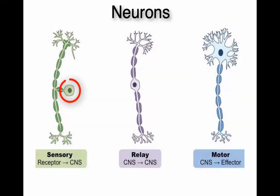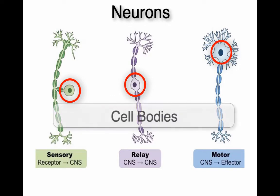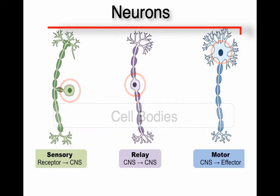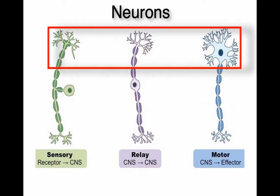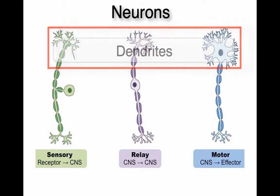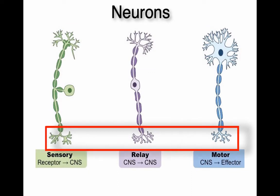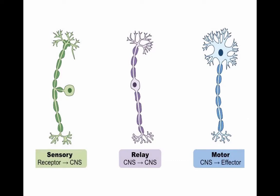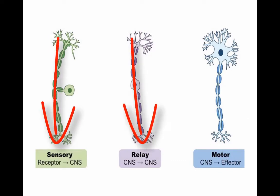All neurons have a cell body that houses all the cell's organelles and nuclei. On either side of the neuron, there are branches that receive stimulus or electrical impulses, which are called dendrites. At the other end, the electrical impulses flow out of the neuron — we call these axons. Electrical impulses only flow in one direction with neurons; they always flow from dendrite to axon.